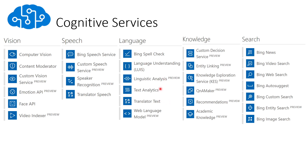We are also going to use text analytics as a skill set within Azure Search — to enrich our data and detect the language, the key phrases from documents we upload in our Azure Search. There is also the translator. For knowledge, there are different services including Q&A Maker, which gives us the option to create a knowledge base, get recommendations, and get entity linking — the relations between different entities in our data.